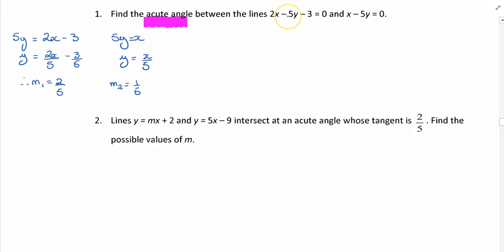So you can see there that I've done that. I've taken the 5y over, so 5y = 2x - 3. Divide by 5 and we get gradient 1 is 2/5. For the other equation, 5y = x, y = x/5, gradient 2 would be 1/5.